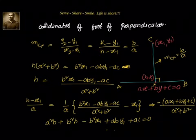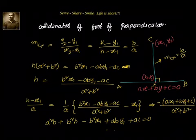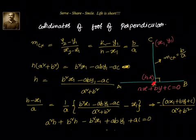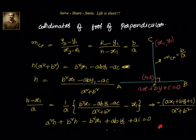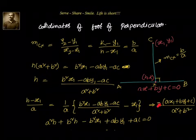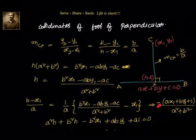The same logic gives the coordinates of the image (reflection) of a point about a line. The straight line acts as a mirror, and the image is at the same distance on the other side. The formula is: (h - x1)/a = (k - y1)/b = -2(ax1 + by1 + c)/(a² + b²) — the only difference is the factor of 2 instead of 1.